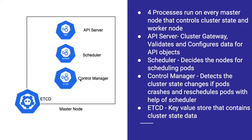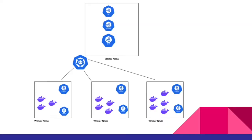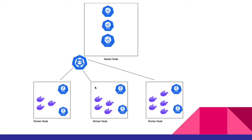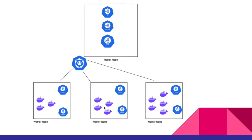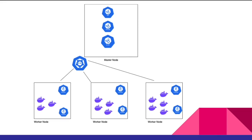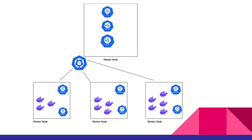The third process within the master node is the controller manager. If we go back to the diagram, let's say a pod is crashing or dying — the controller manager detects those changes and helps in recovering those pods. It creates a new request to the scheduler, the scheduler decides the node, and then the process within that node actually runs the container. That's how the controller manager helps in detecting cluster state changes and recovering crashed pods.